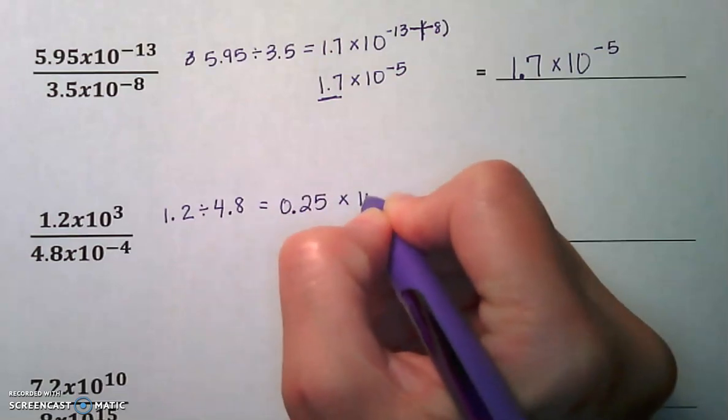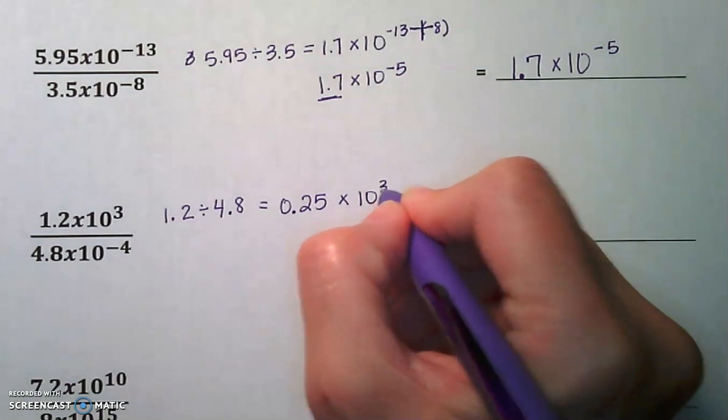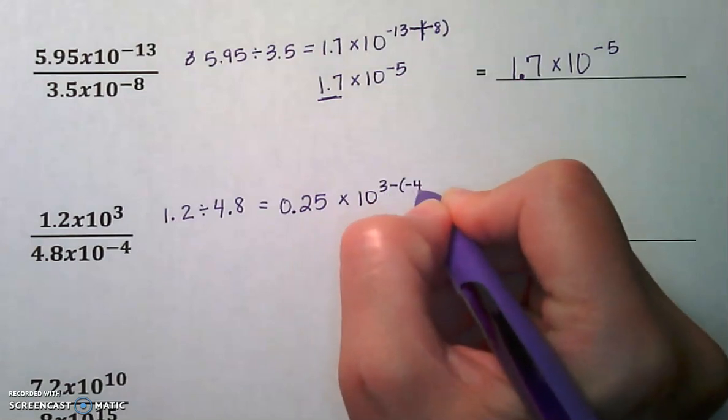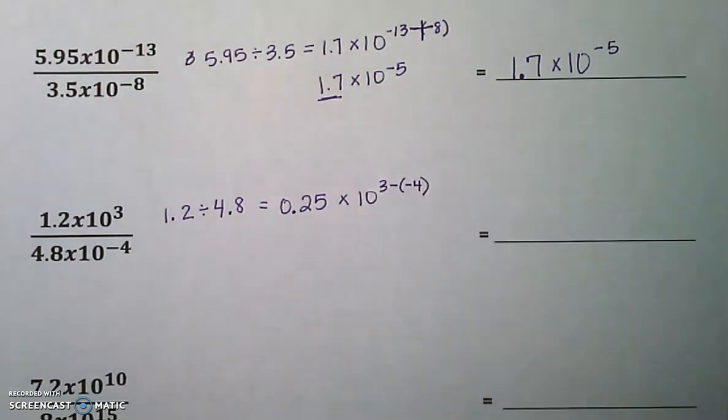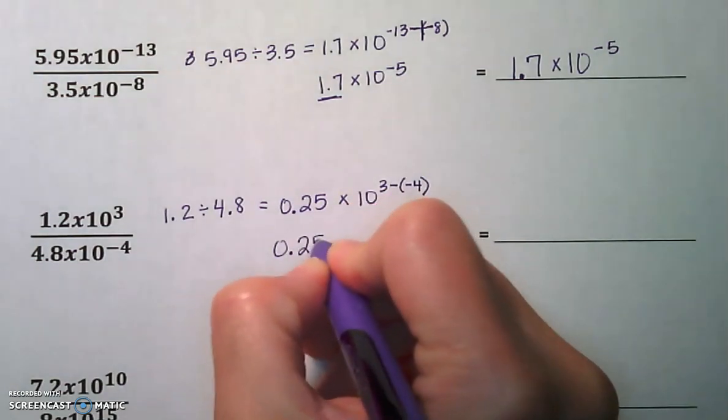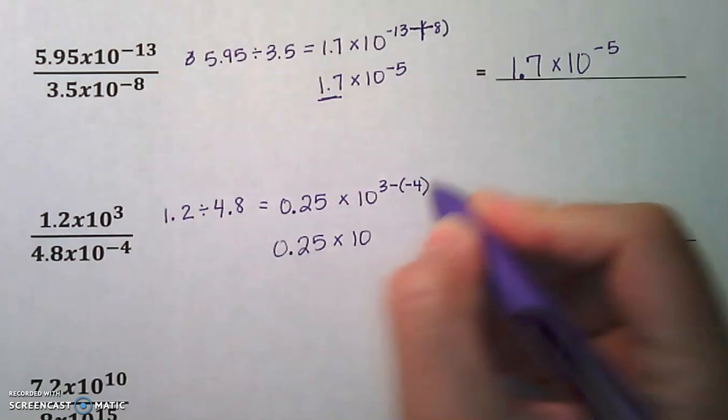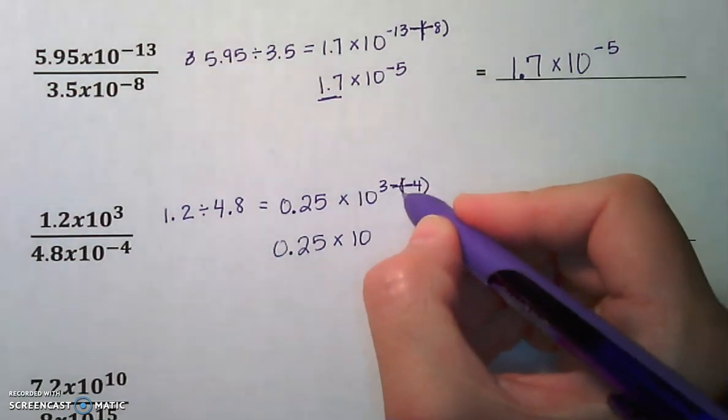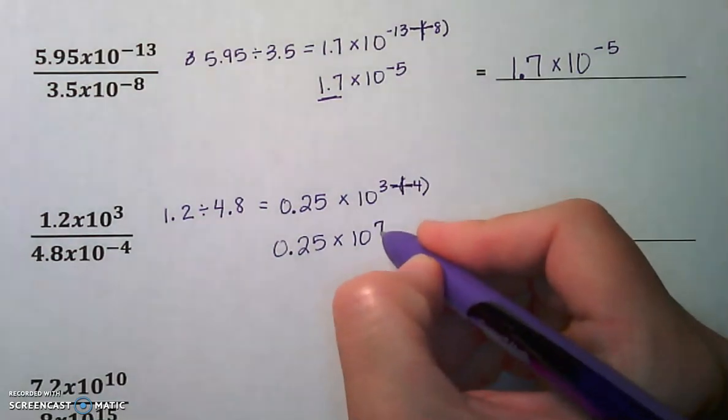We are going to keep our base of 10. We are going to subtract 3 minus negative 4. So it's integer work we're going to have to take care of here. So we get 0.25 times 10. 3 minus negative 4 is really 3 plus 4, which is 7.